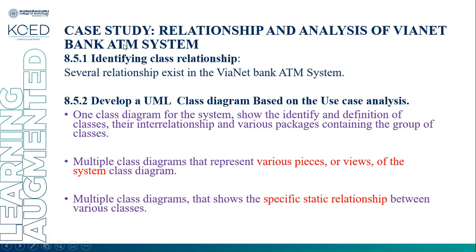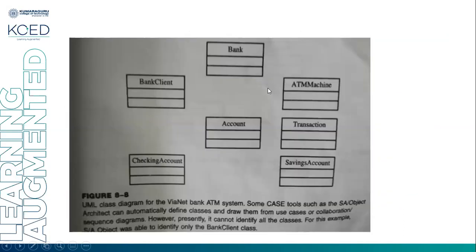Next, we discuss a case study: the YNET ATM bank system. Using this case study, we examine how classes are identified, how association and inheritance relationships are formed, and how the whole-part relationship is defined. Several relationships exist in the YNET ATM bank system. Developers use UML class diagrams based on use case analysis. One class diagram for a system shows the identity and definition of the classes, their interrelationships, and the various packages contained in a group of classes. Multiple class diagrams represent various pieces or views of the system and show specific static relationships between classes. The classes identified for the YNET ATM bank system are: bank, bankline, ATM machine, transaction, account, saving account, and checking account — identified by analyzing the use cases.